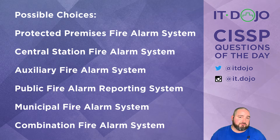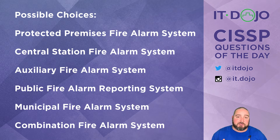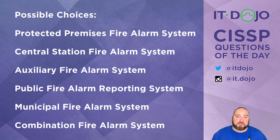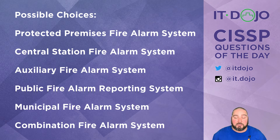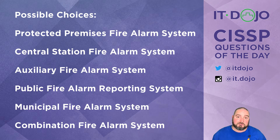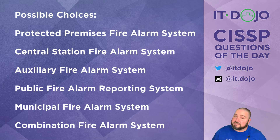First option is a protected premises or local fire alarm system. A protected premises fire alarm system is basically an on-site system — you have your own local alarms, it can control sprinkler systems and things like that, but it does not notify anybody that you need help. It doesn't notify a monitoring company, local police, or fire department. It's just a local alarm system, so that's not the answer we're looking for.